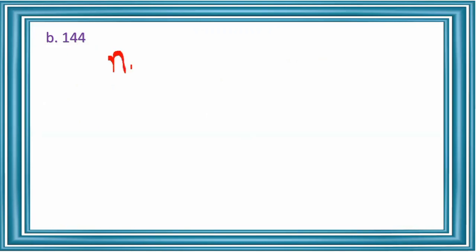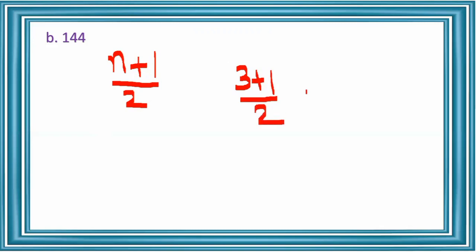Next number, 144, is also a perfect square. How many digits are there? 3 digits. So which equation do we use? (n+1)/2. Here n equals 3, so (3+1)/2 = 4/2 = 2. The square root of 144 has 2 digits. As you all know, the square root of 144 is 12, which has 2 digits.